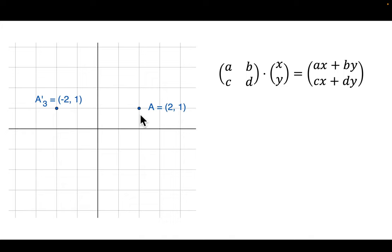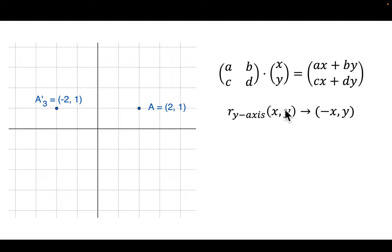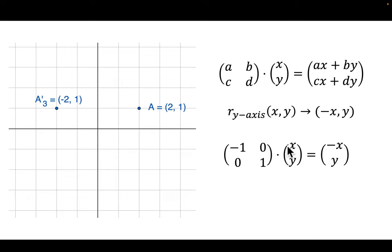What about this one? We're reflecting over the y-axis. The point (2, 1): the x-value 2 becomes -2, but the height stays the same. We need a matrix that takes (x, y) to (-x, y). We can do that by multiplying [-1, 0; 0, 1] by (x, y). The top row gives -x + 0y = -x; the bottom row gives 0x + y = y. So we start at (x, y) and end up at (-x, y) — that's our reflection over the y-axis matrix.